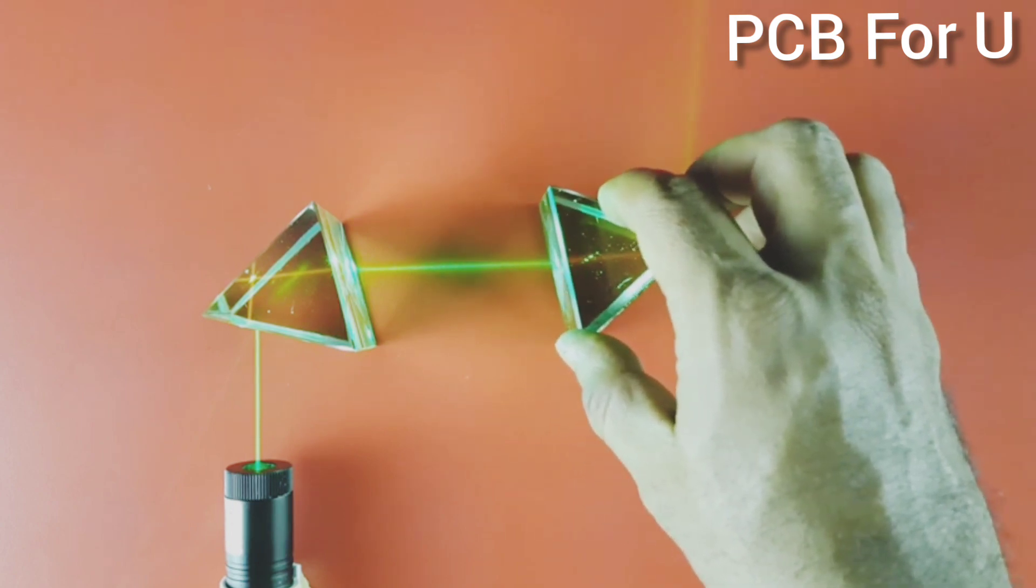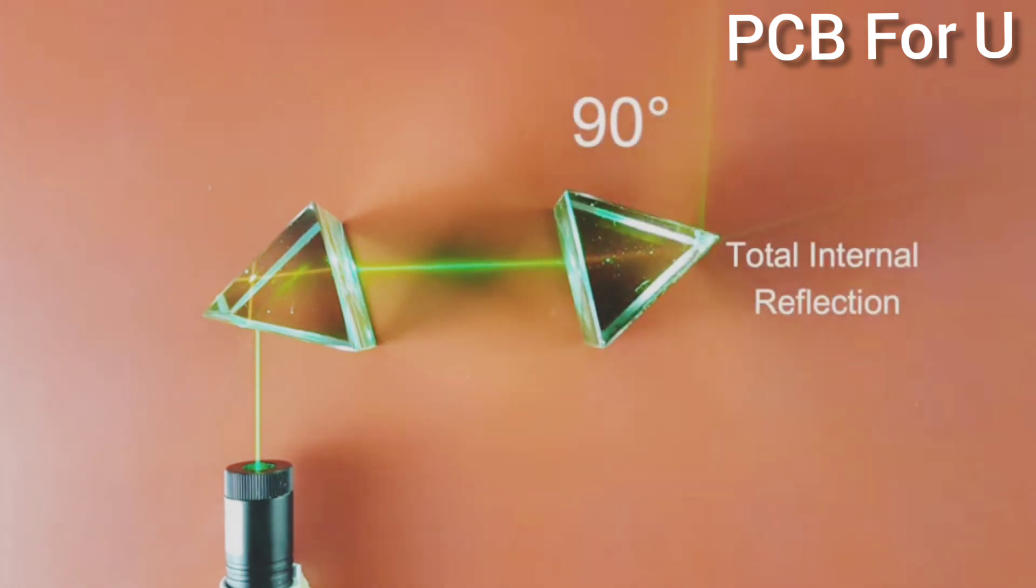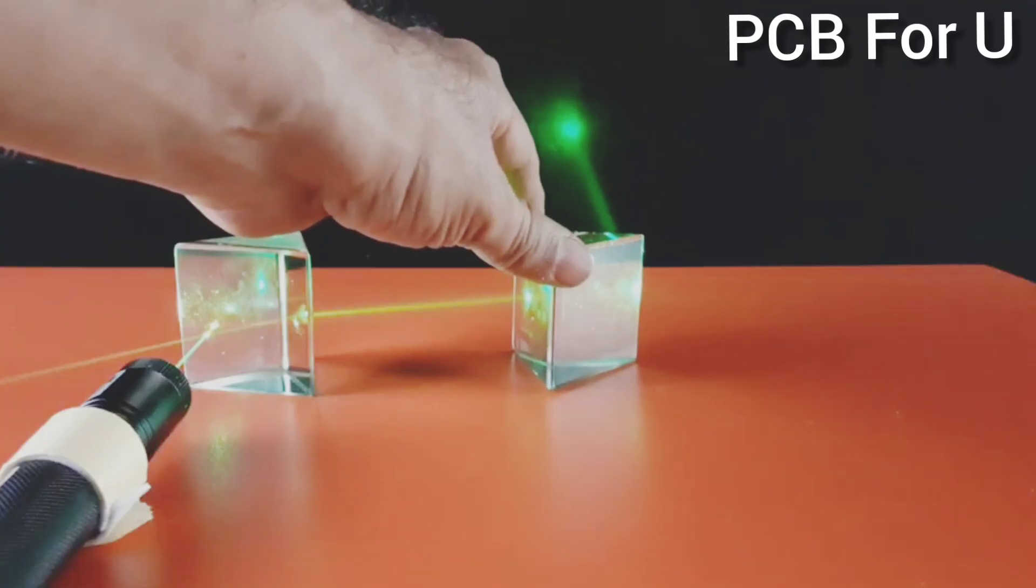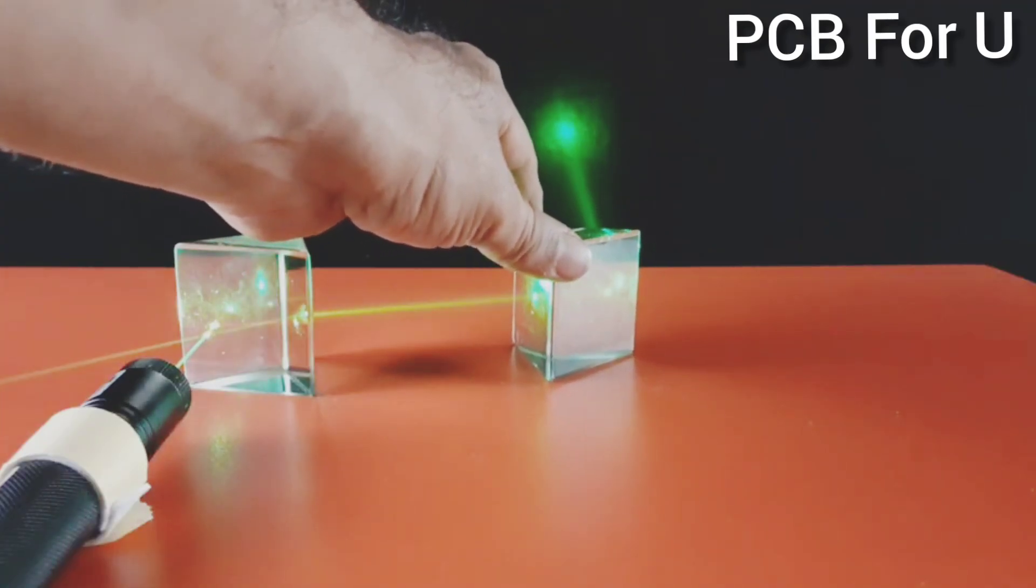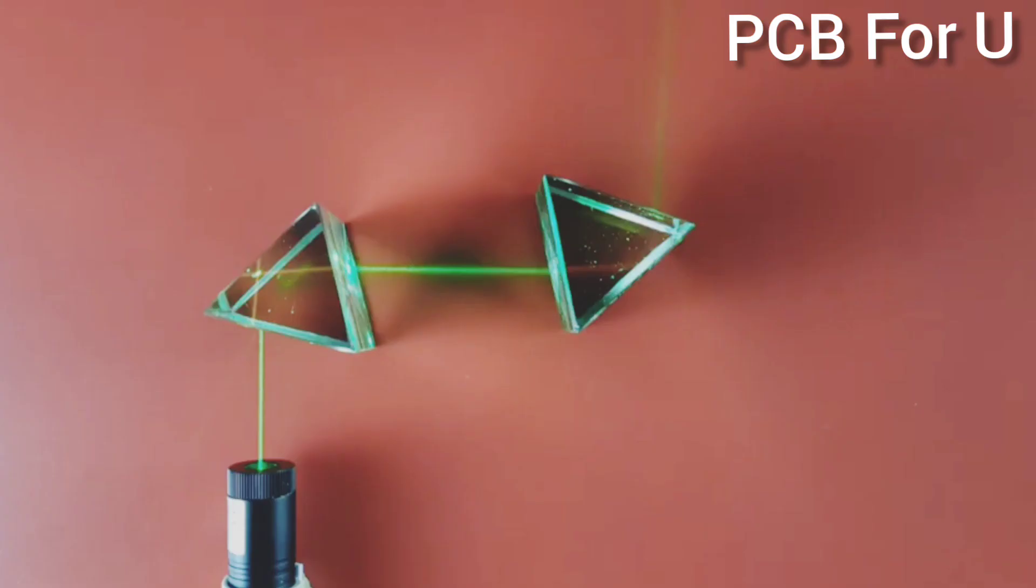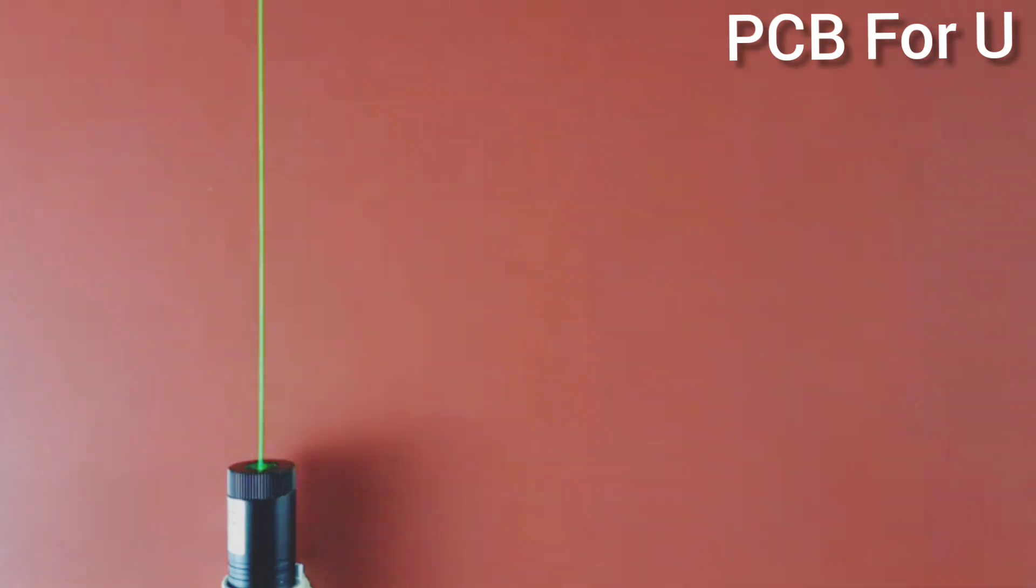If we place another prism, now we can adjust the prism. Now we can also get 90 degree total internal reflection here.